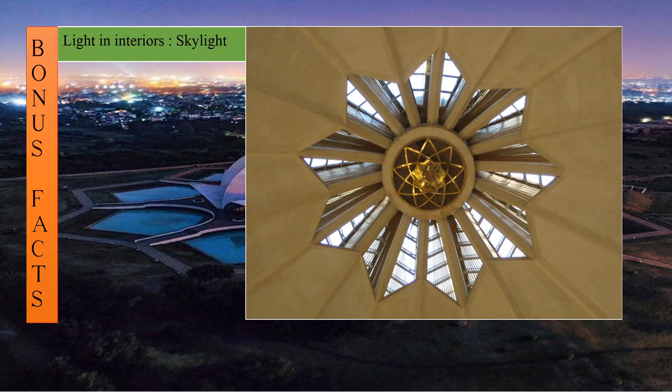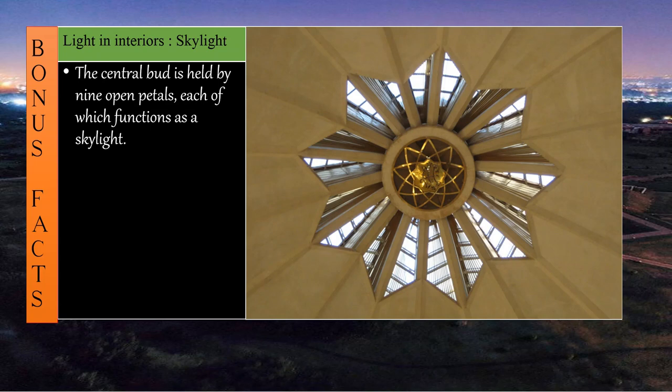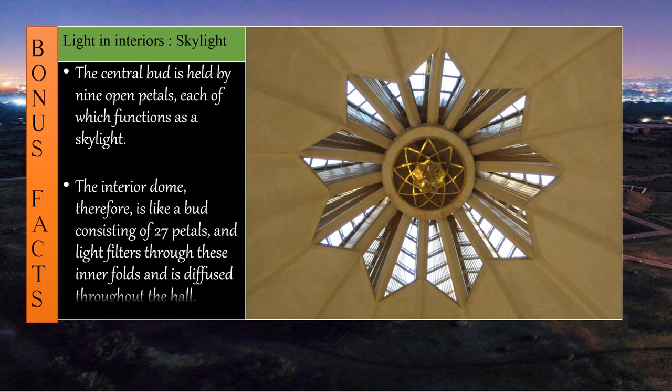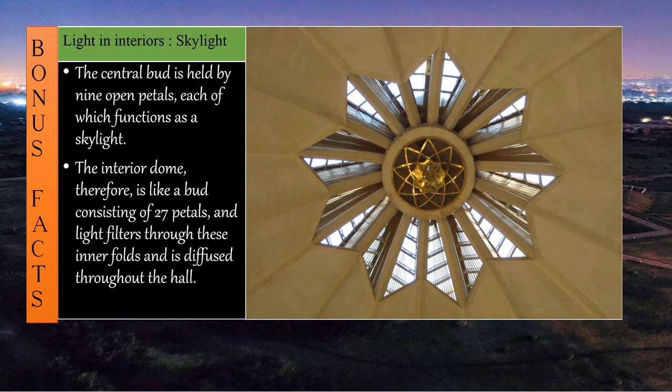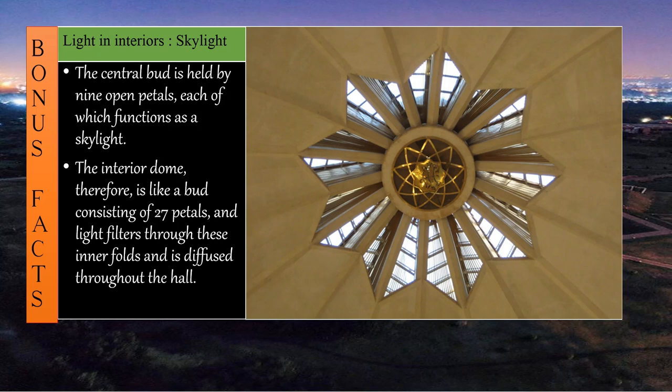Bonus fact number three: light in interiors via skylight. Providing electrical lighting all the time in this huge monument would cost a fortune — so it was a smart move to provide illumination through skylights. The central bud is held by nine open petals, each functioning as a skylight. The interior dome is like a bud consisting of 27 petals, and light filters through these inner folds and is diffused throughout the hall.